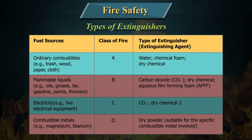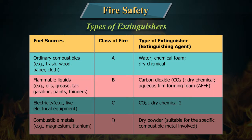Type of extinguisher for Class A: water, chemical foam, dry chemical. Fuel source of flammable liquids, examples: oils, grease, tar, gasoline, paints, thinners. Its class of fire is B.